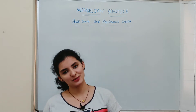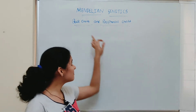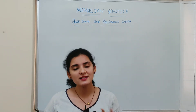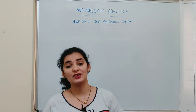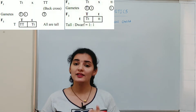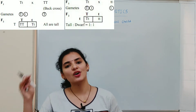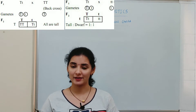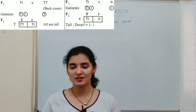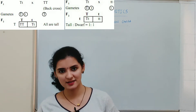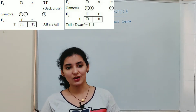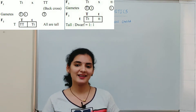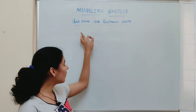One more similar kind of cross is back cross. Back cross is also a simple procedure in which the hybrid plant is crossed with any one of the parents. So if it is crossed with a double recessive parent then it is a test cross, but if it is crossed with any one of the parents then it is a back cross.